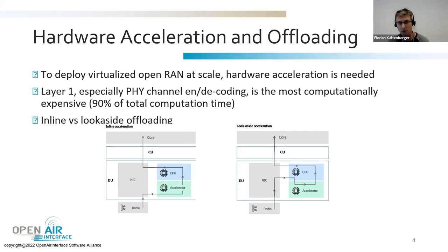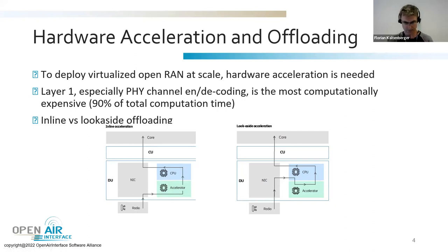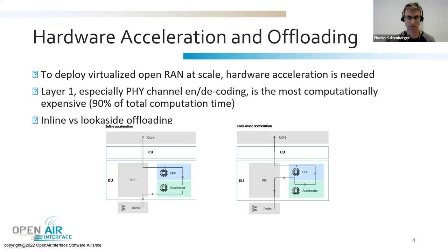There are two basic approaches to hardware acceleration: inline versus look-aside offload. Inline offloading means the complete Layer 1 is offloaded to a separate entity that interfaces with higher layers on one side and directly with the radio on the other. Look-aside acceleration, by contrast, does not offload the entire Layer 1 — some parts still run on the CPU, with only the most processing-intensive tasks like channel encoding and decoding offloaded to a hardware accelerator.